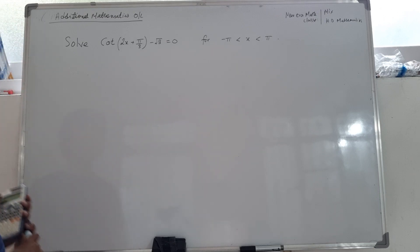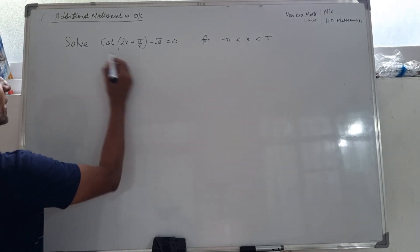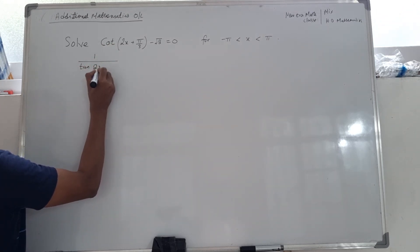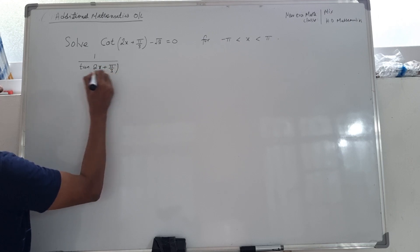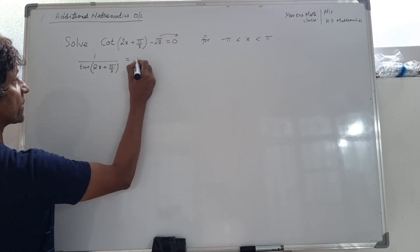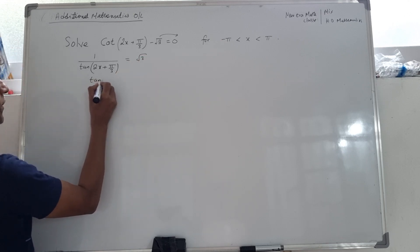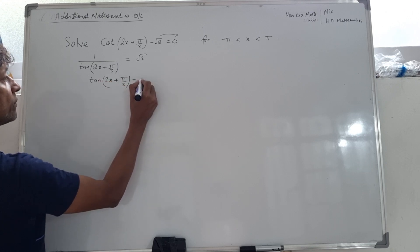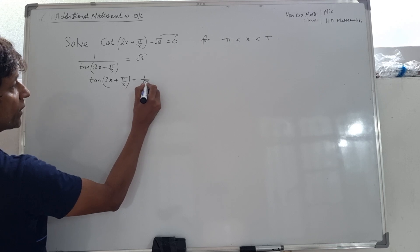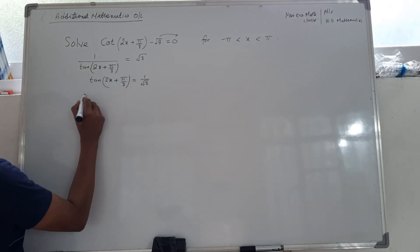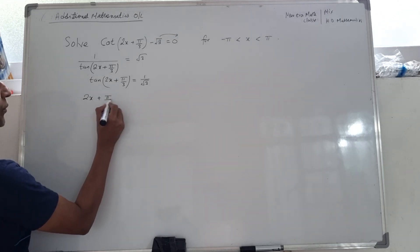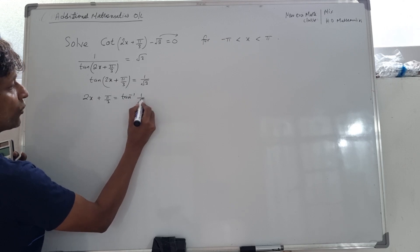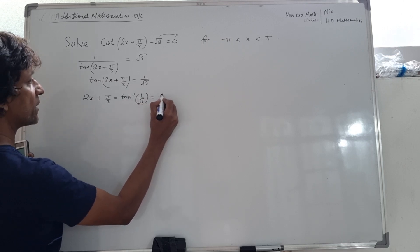The first thing we need to do is use the equivalent form: cot becomes 1 over tan, so 1 over tan(2x + π/3) = √3. Moving √3 across gives tan(2x + π/3) = 1/√3, and from the calculator, 2x + π/3 = tan⁻¹(1/√3), which equals π/6.